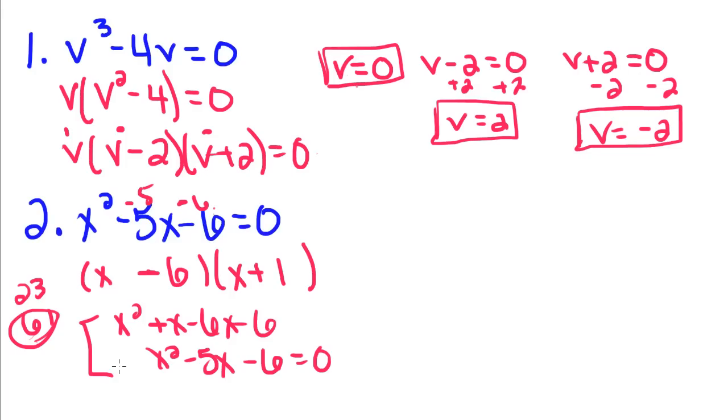Now, this work was just to check if those factors really do multiply to give me this. Then I set each one of these equal to zero. I add the 6 over and get x equals 6 and x equals negative 1.